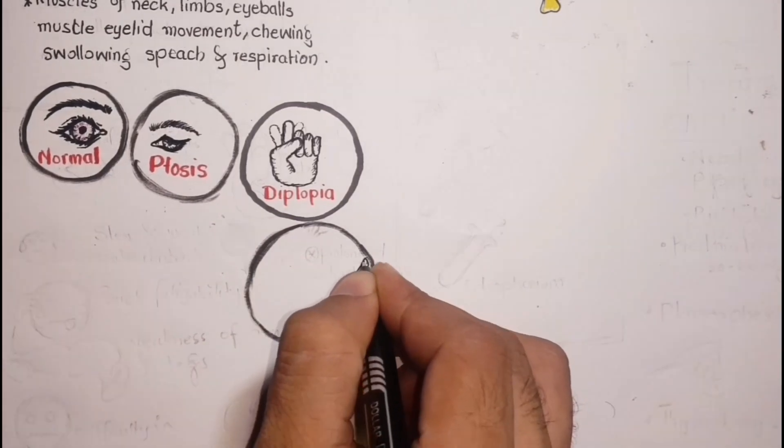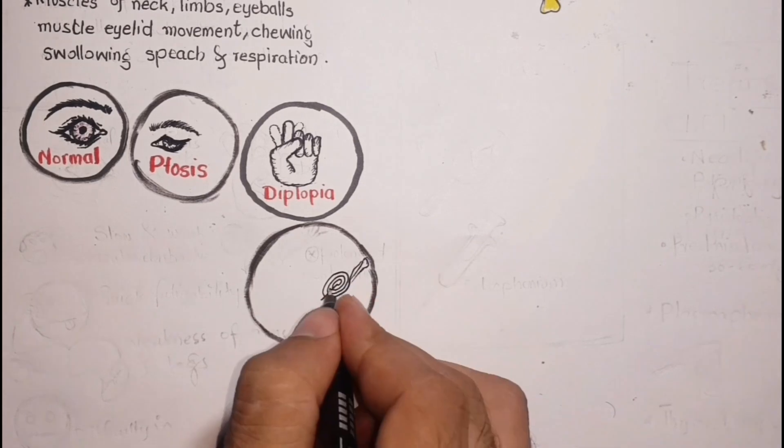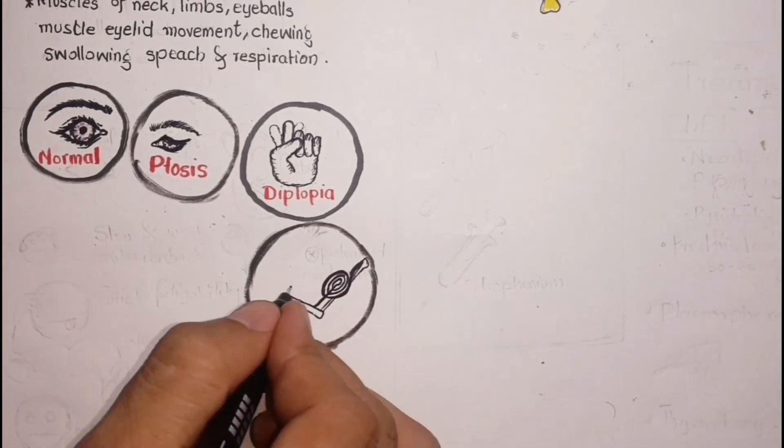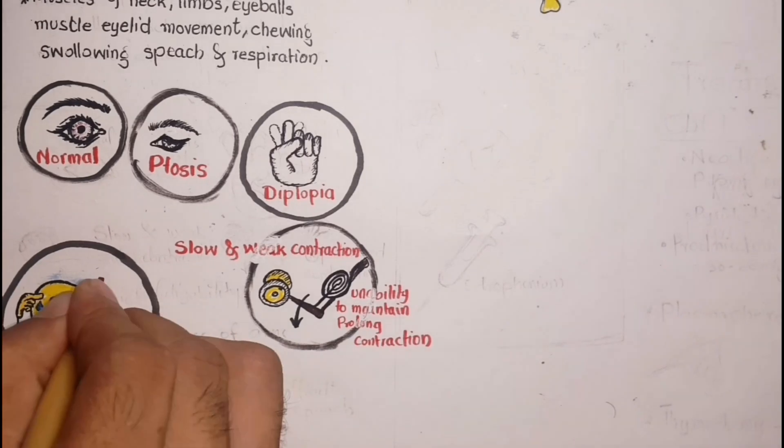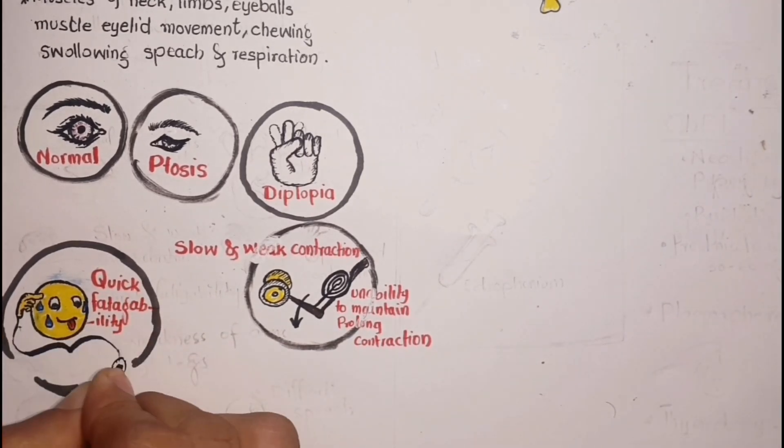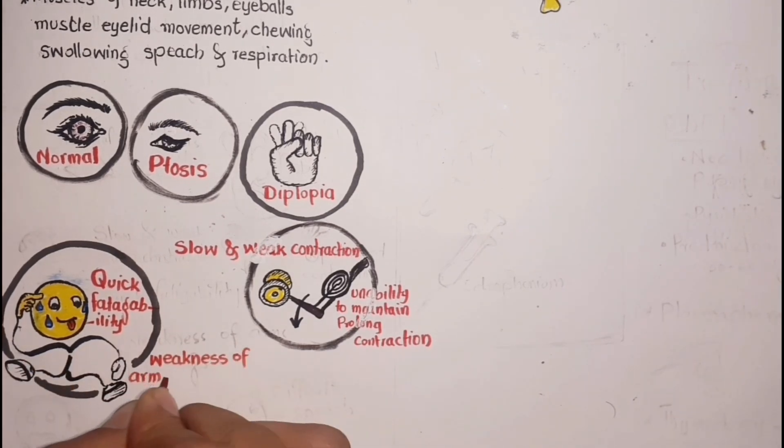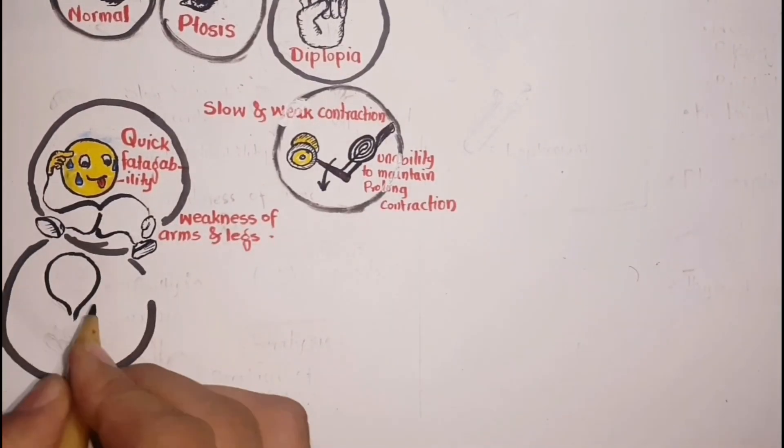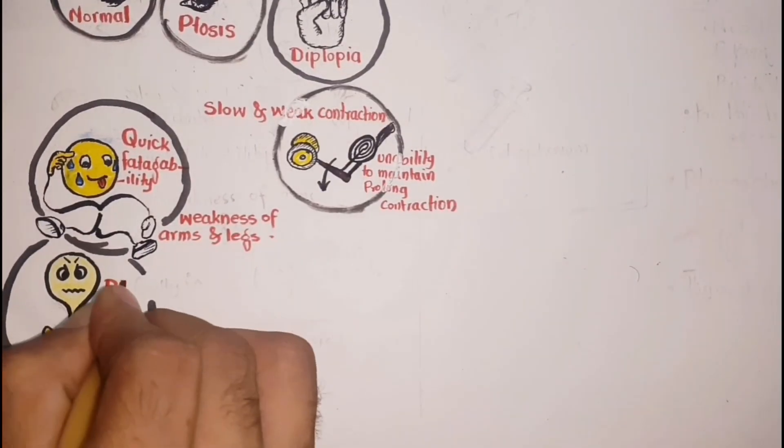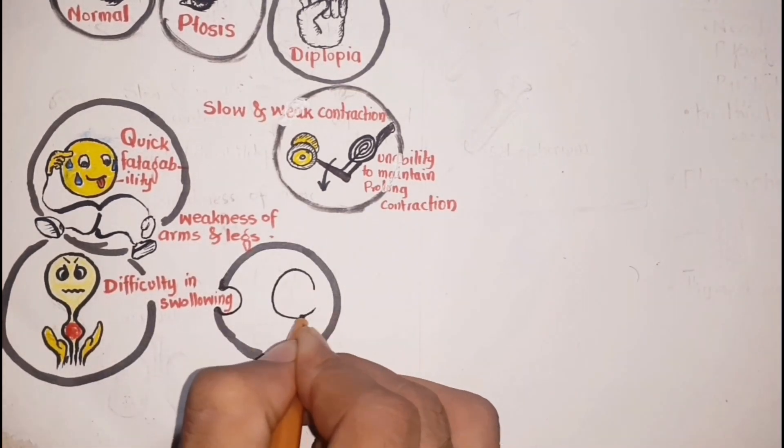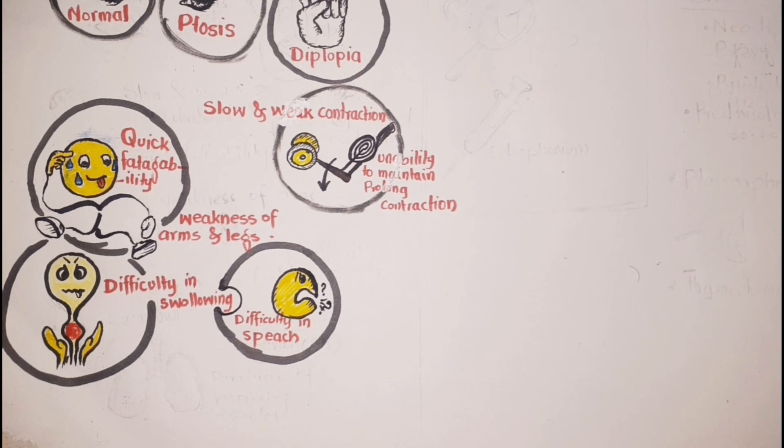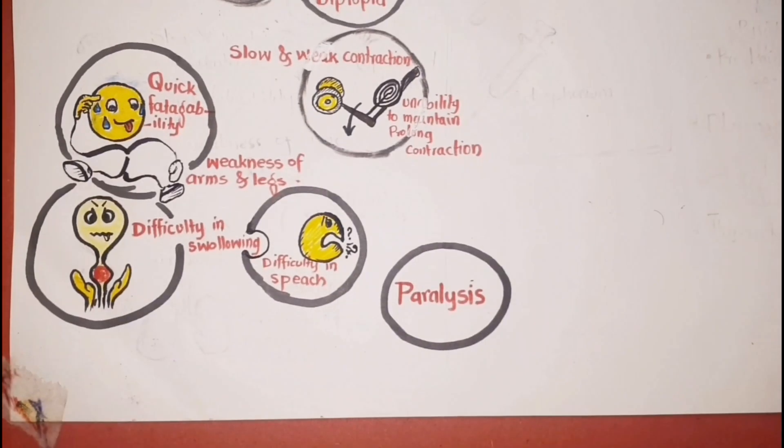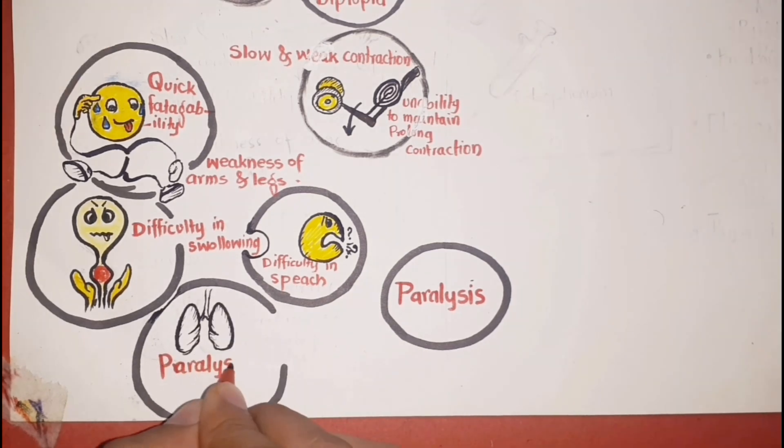Other symptoms include slow and weak muscular contraction and inability to maintain prolonged contraction of skeletal muscles, quick fatigability with repeated muscular contractions, weakness and fatigability of arms and legs, difficulty in swallowing due to weakness of the throat muscles, difficulty in speech due to weakness of muscles of speech. While in severe conditions, there is paralysis of muscles. Patients die mostly due to the paralysis of respiratory muscles.